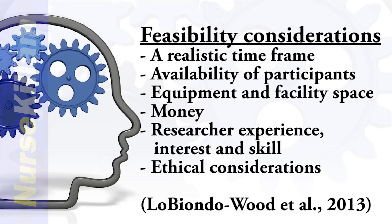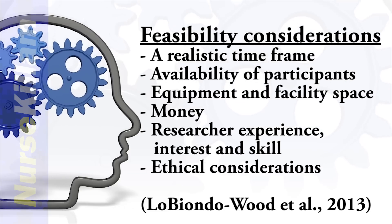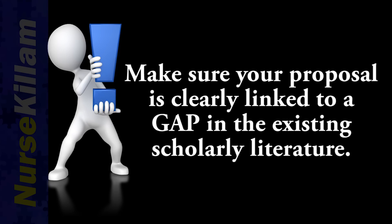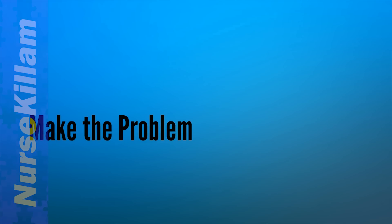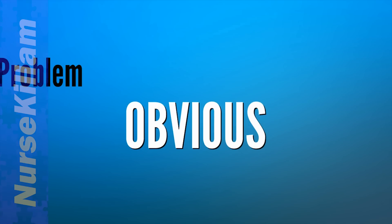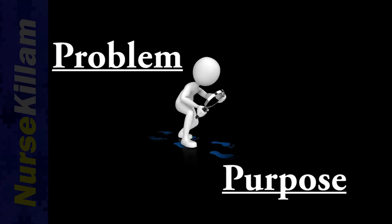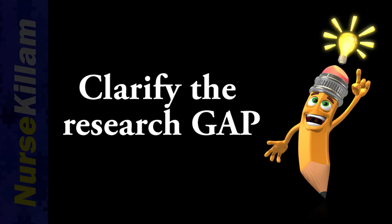Throughout your background, you have been critiquing gaps in previous research. Now you need to be sure the reader knows what the problem is that your study will be addressing. At the end of the literature review, a specific problem that your study will address should be clearly articulated. This statement needs to clearly lead to your study purpose. It is a specific problem statement which clarifies the research gap at the end of the background section. The problem should be stated in one clear question or sentence.